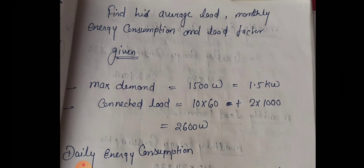So find his average load, monthly energy consumption, and load factor. Given data: maximum demand 1500 watts. If we convert it in form of kilowatt, it becomes 1.5 kilowatts. Connected load is 10 into 60 because 10 number of equipments and 60 watts the power of the equipment, plus 2 into 1000. So total connecting load is 2600 watts.